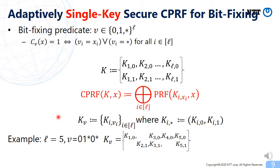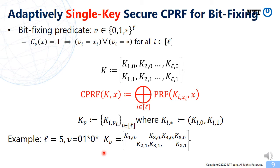For a bit-fixing predicate v, the constraint key K_v is a subset of these keys chosen according to the predicate v. For example, if L equals 5 and v equals (0,1,0,0,*), then K_v looks like the corresponding subset. Evaluating on an input that satisfies v is possible because the required keys are contained in K_v. However, if the input does not satisfy v, the required key is missing and evaluation is impossible. In general, we can prove this construction satisfies security if the adversary obtains at most one key.